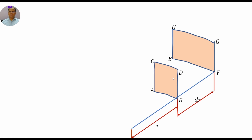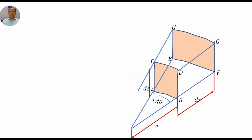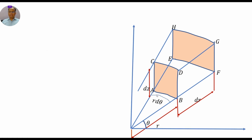In the radial direction, face abcd is the inlet face and face efgh is the outlet face. The distance from the origin to the first inlet face is r, and dr is the width of the fluid element. The height of the fluid element is dz. The distance from a to b is r·dθ, where r is the radius and it makes an angle θ, so it becomes r·dθ.